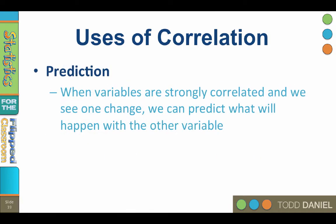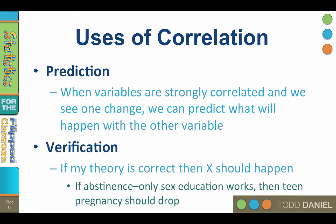The third use for correlation is prediction. If two variables are strongly correlated, such as a drop in barometric pressure and an increase in precipitation, the next time we see the barometer begin to drop, we can predict that it will rain soon. When two variables are correlated, when we see one change, we can predict what will happen with the other.